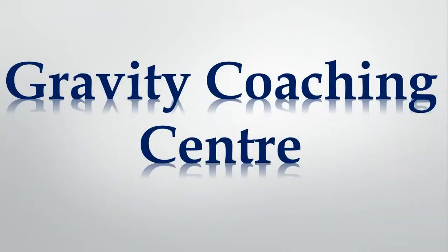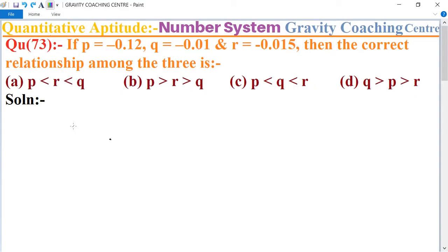Welcome to Gravity Coaching Center. Quantitative Aptitude, chapter Number System, question number 73: If P = -0.12, Q = -0.01, and R = -0.015, then the correct relationship among the three is: